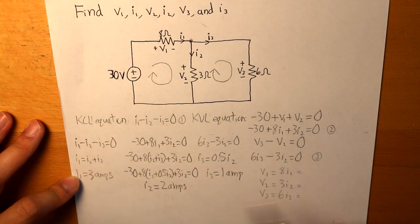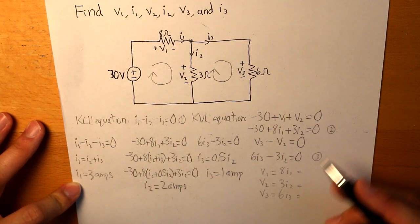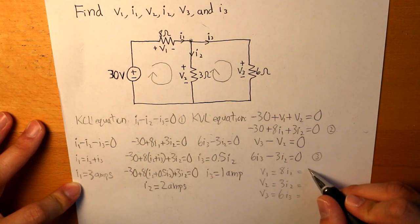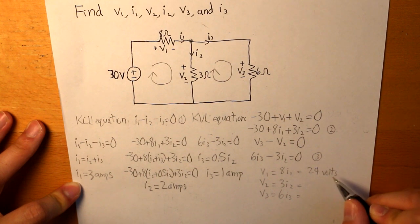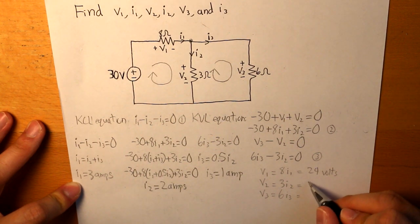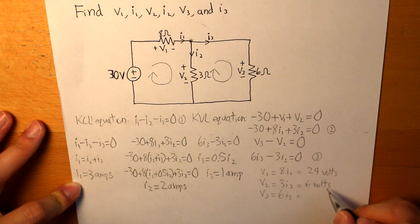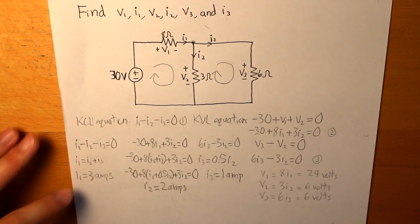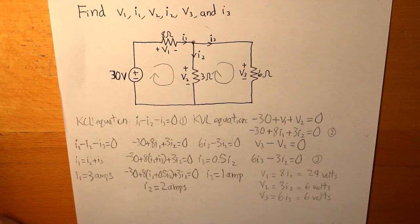And then we can sub these values in to determine what each voltages are. So for V1, it's going to be 24V. V2 is going to be equal to 6V. And V3 is going to be equal to 6V as well. And there we go. This is a practical example on how to use KCL and KVL to find our unknown elements.